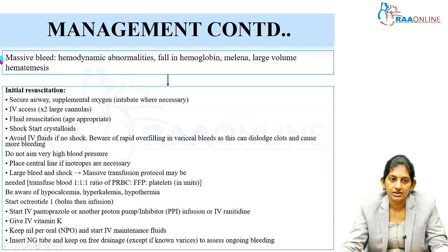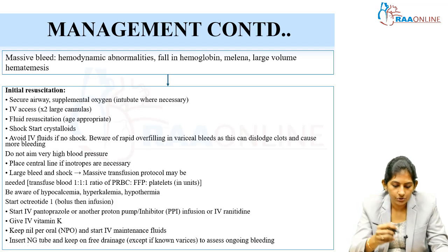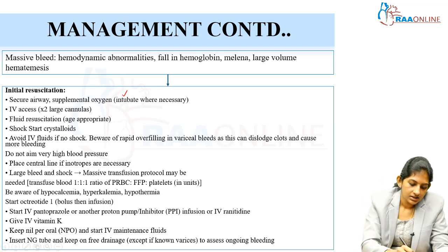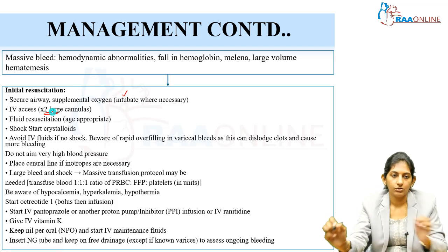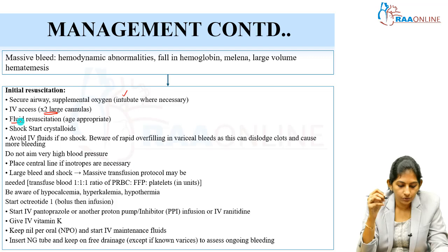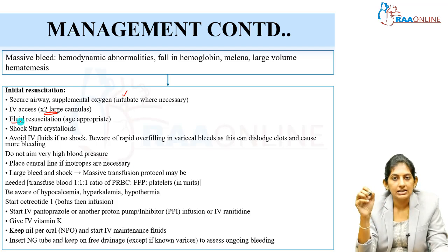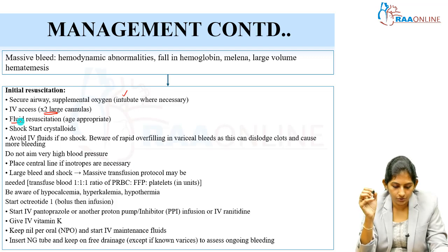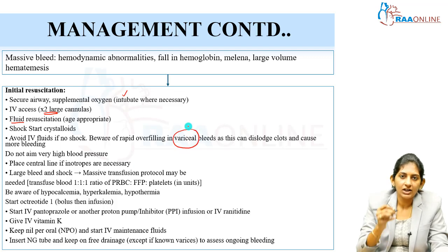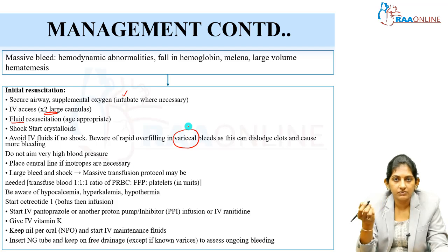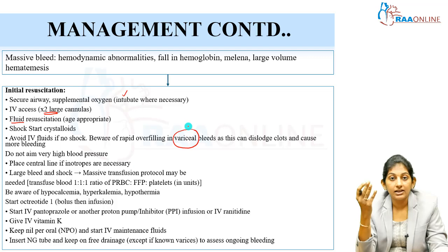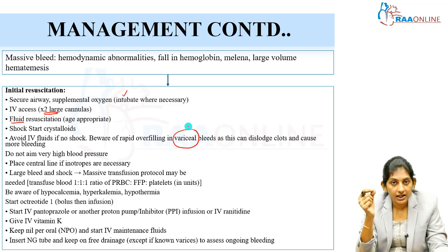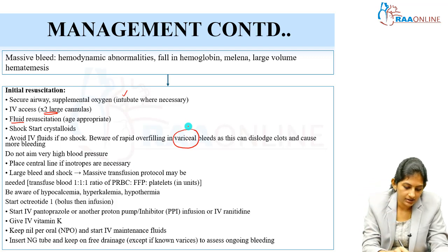If there is a massive bleed and the child is hemodynamically unstable, immediately secure the airway — intubate if unstable, or provide supplemental oxygen. Always secure two large-bore cannulas. Resuscitate with age-appropriate fluids. If there is shock, give normal saline boluses — but give fluids only when there is shock and hypovolemia. For variceal bleeding, be careful: too much fluid fills the varices and can cause re-bleeding and dislodge clots. If inotropes are necessary, place a central line.